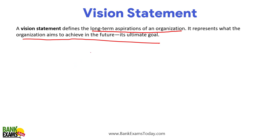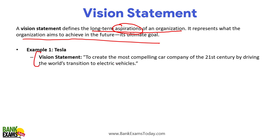The vision statement is aspirational in nature — it describes what you want to become in the future. For example, if you ask a 10-year-old kid what they want to become, they might say a cricketer, astronaut, doctor, or even a politician. That's their vision. Similarly, organizations have visions. A small MSME with a turnover of 200 crore may have a vision to become part of the Nifty 100 — among the top 100 listed companies.